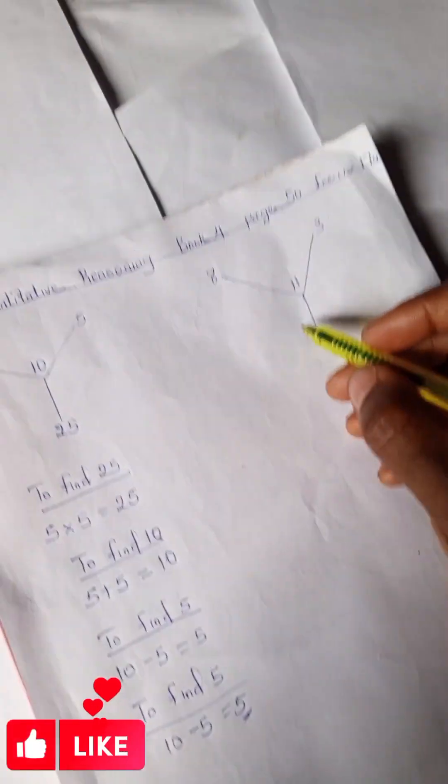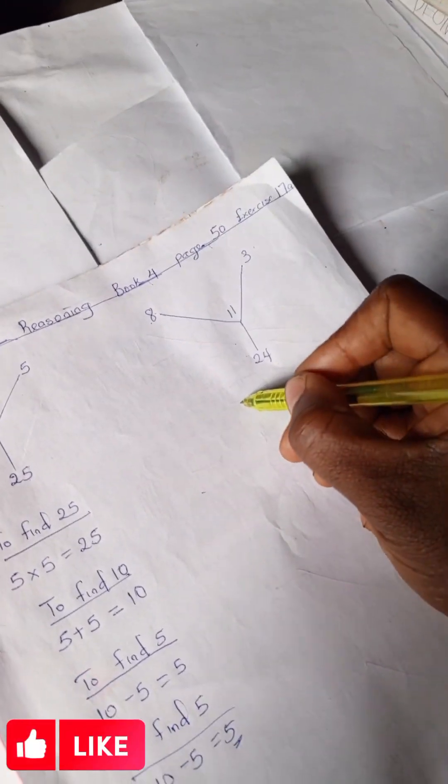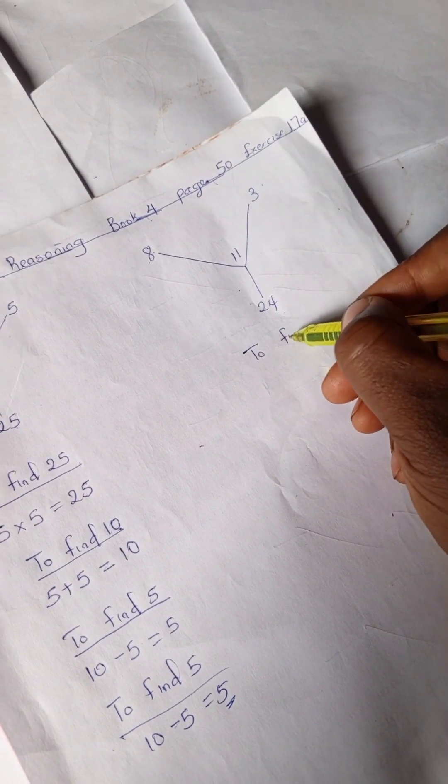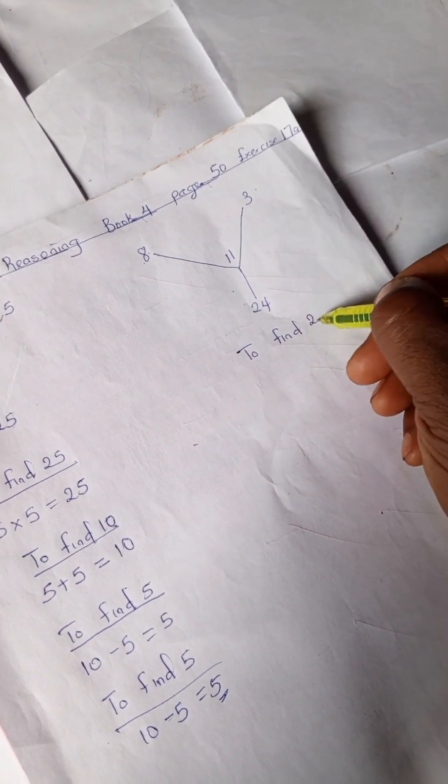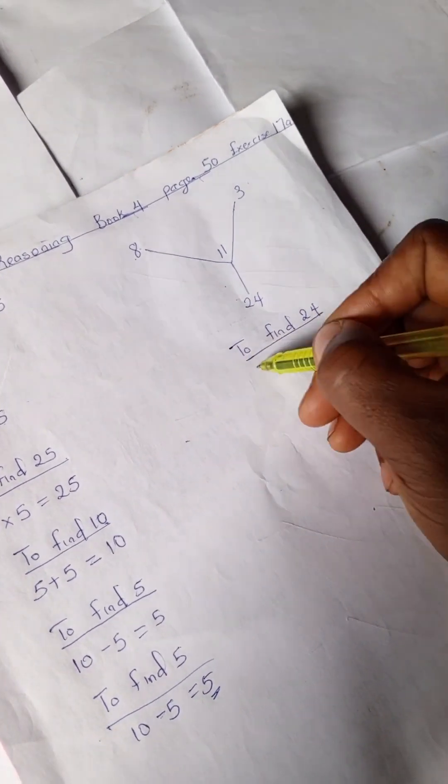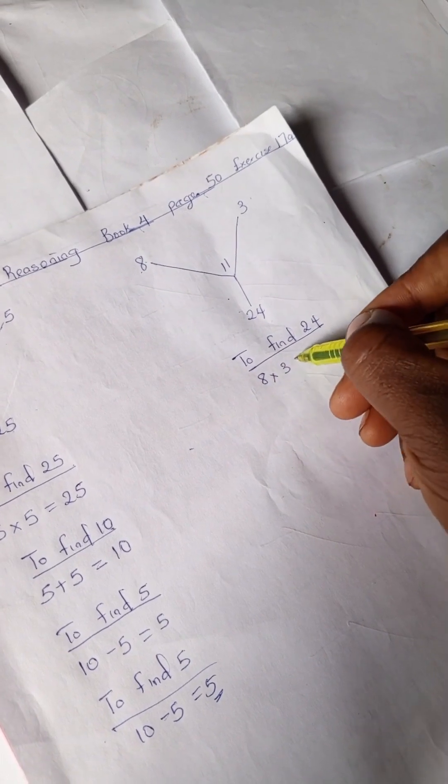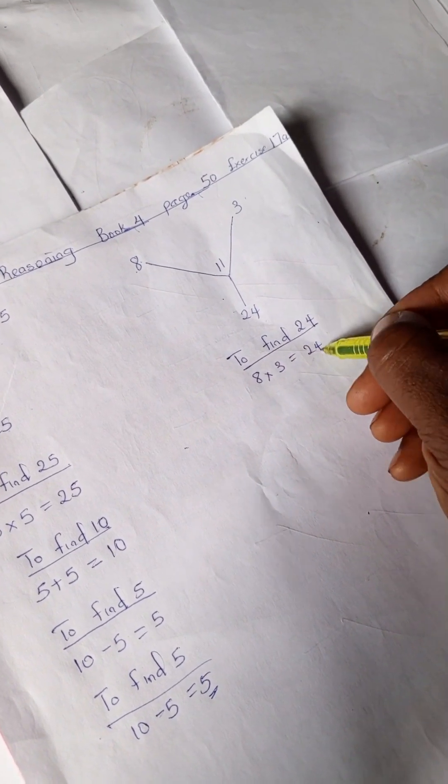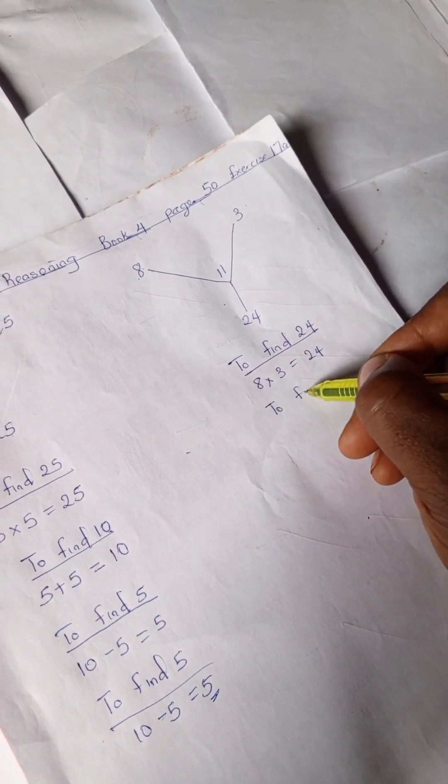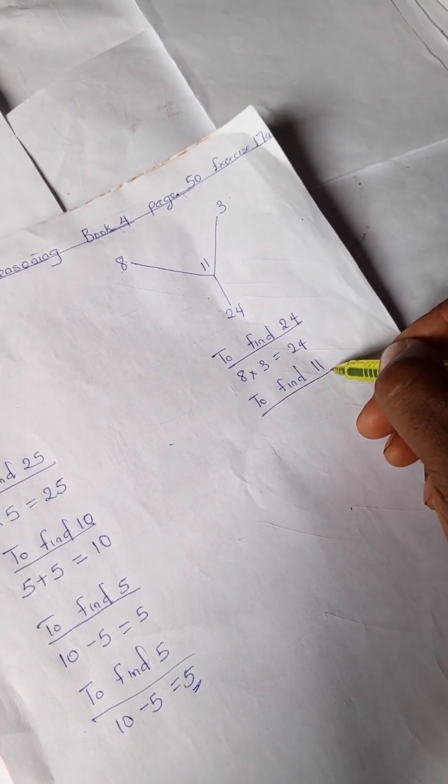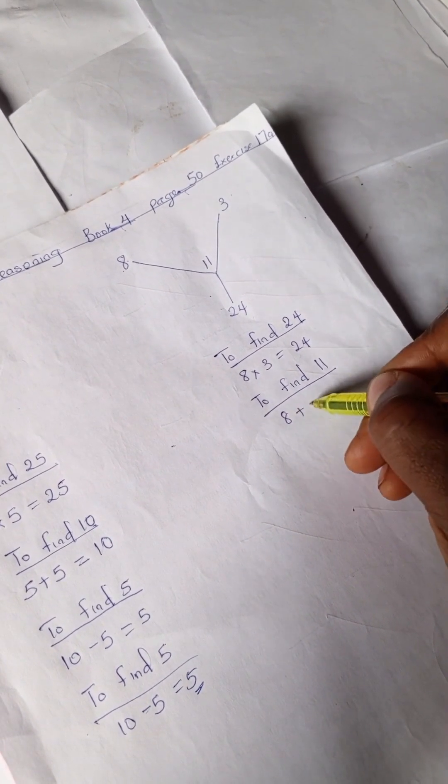So we can also do the same for this. To find 24, you have 8 times 3 is 24. To find 11, we have 8 plus 3 is 11.